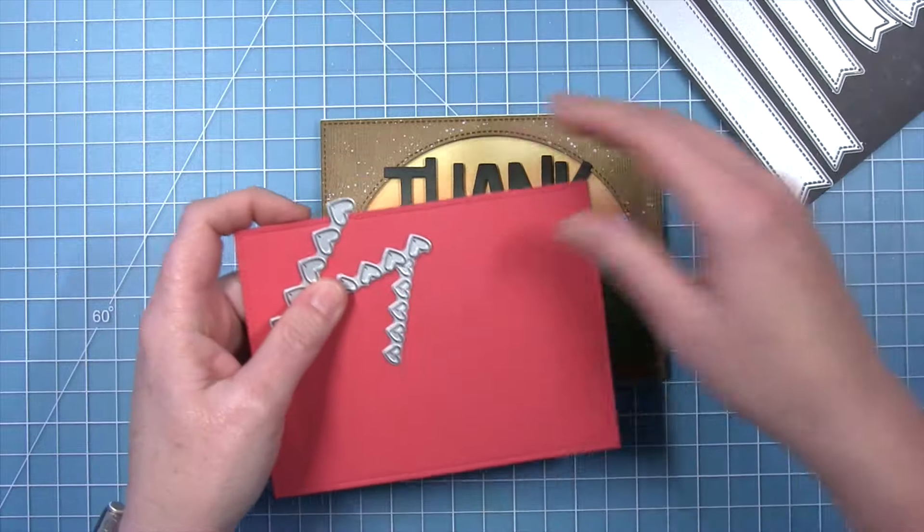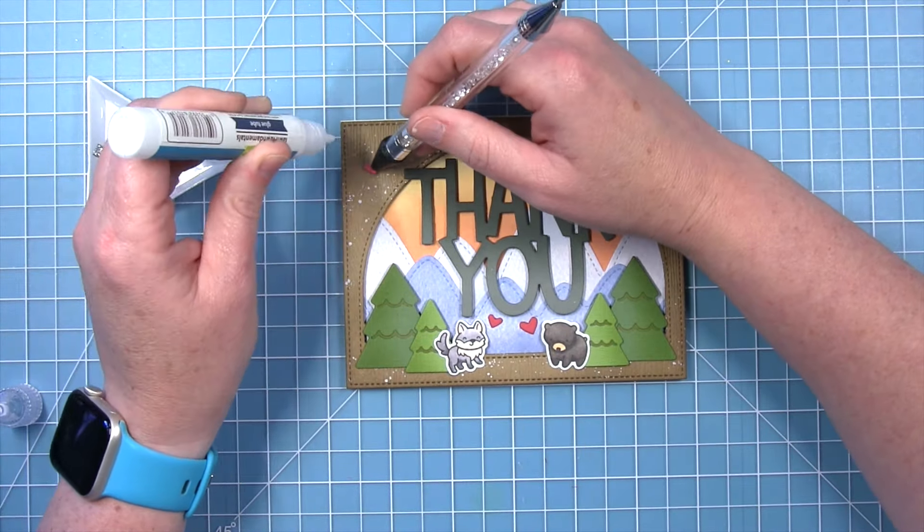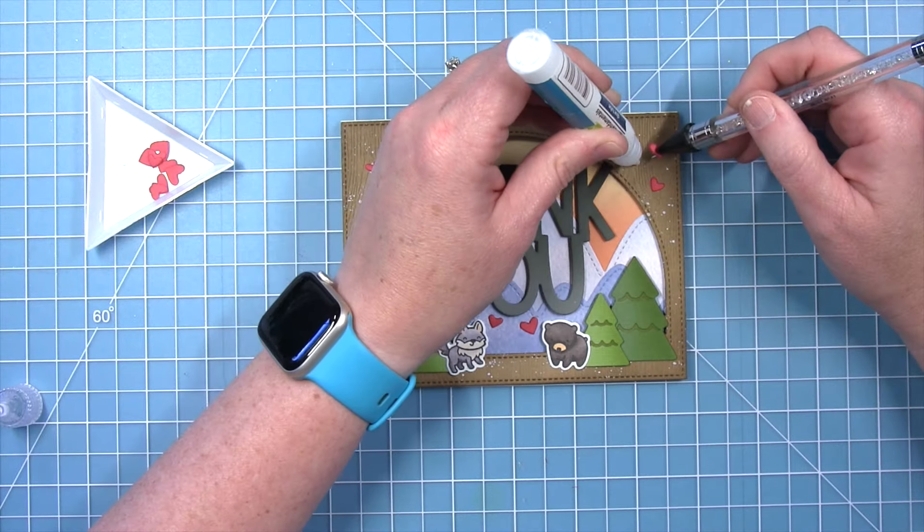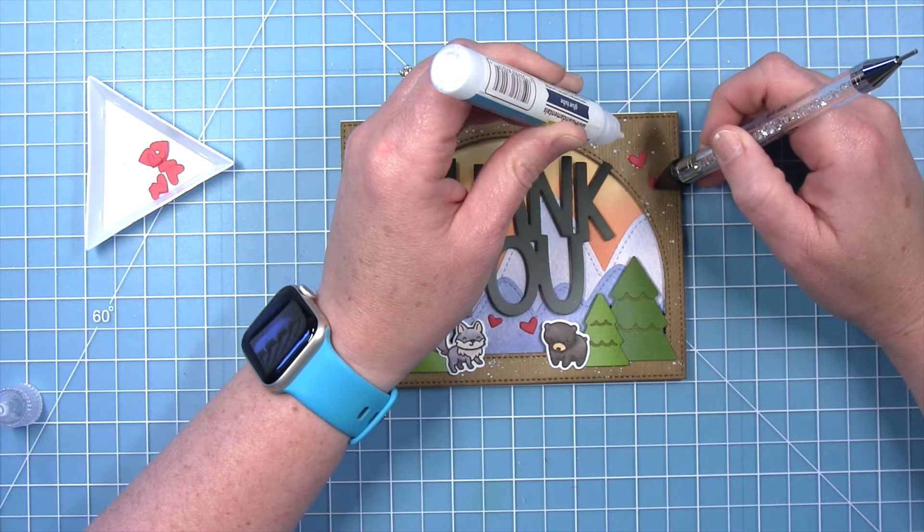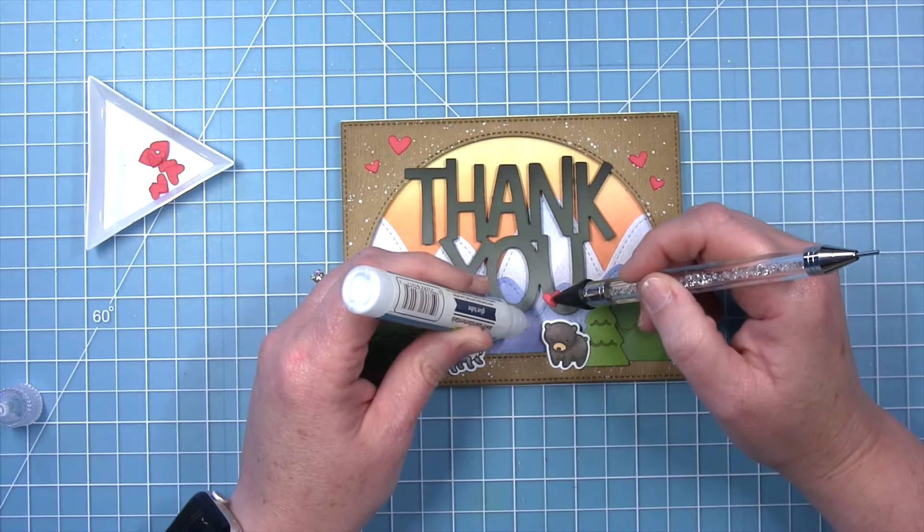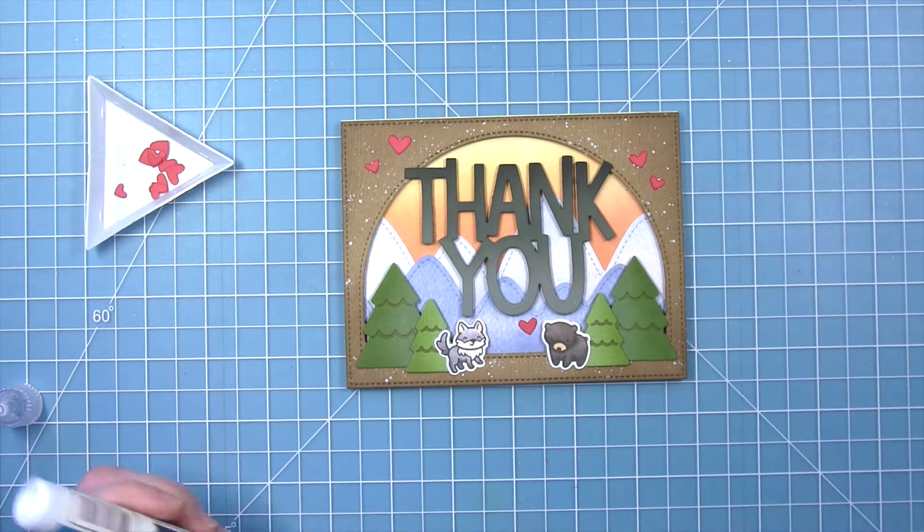And of course I need to add some little hearts and some little love. So I have some raspberry cardstock and the hearts and stars skinny tag die, and I'm adding those hearts to those top corners so they don't look so empty. And I decided to use only one heart at the bottom with my little animals.